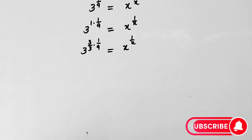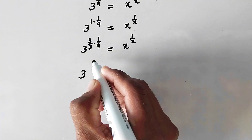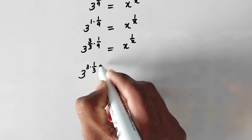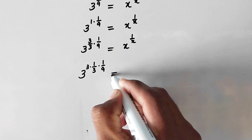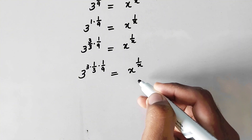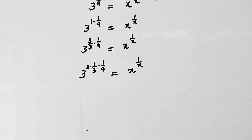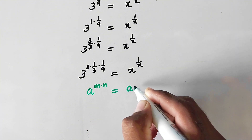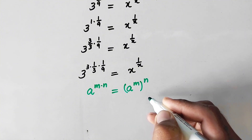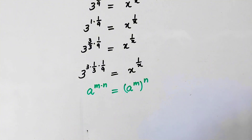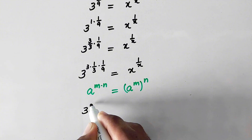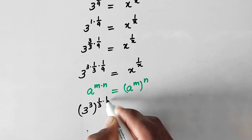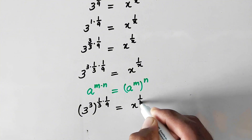In the next step we write 3 to the power 3 times 1 over 9 equals x to the power 1 over x. We follow the property of exponents: a to the power m times n equals a to the power m, to the whole power n. By following this property we can write 3 to the power 3 times 1 over 9 equals x to the power 1 over x.